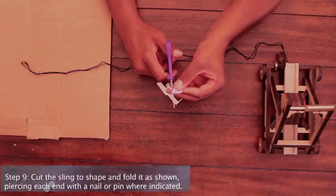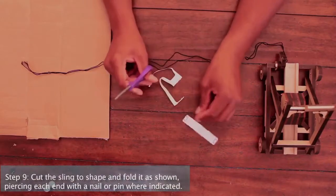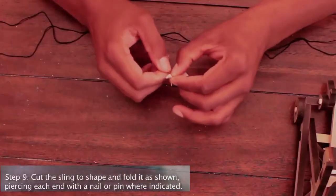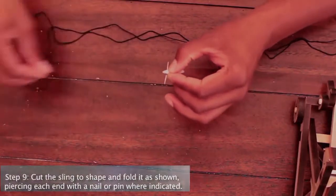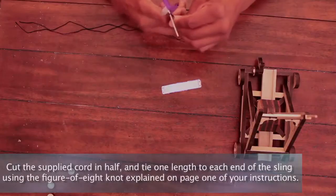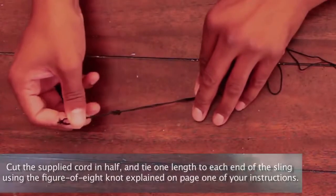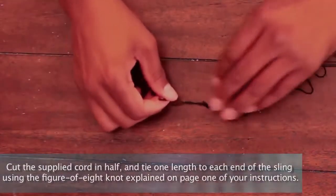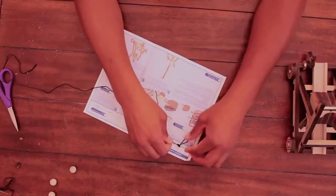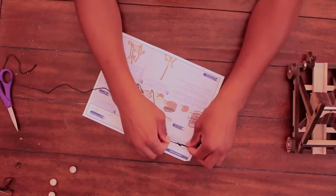Step 9: Cut the sling to shape and fold it as shown, piercing each end with a nail or pin where indicated. Next, cut the supplied cord in half and tie one length to each end of the sling using the figure-of-eight knot explained on page 1 of your instructions. Use the guide on the top of your instructions.